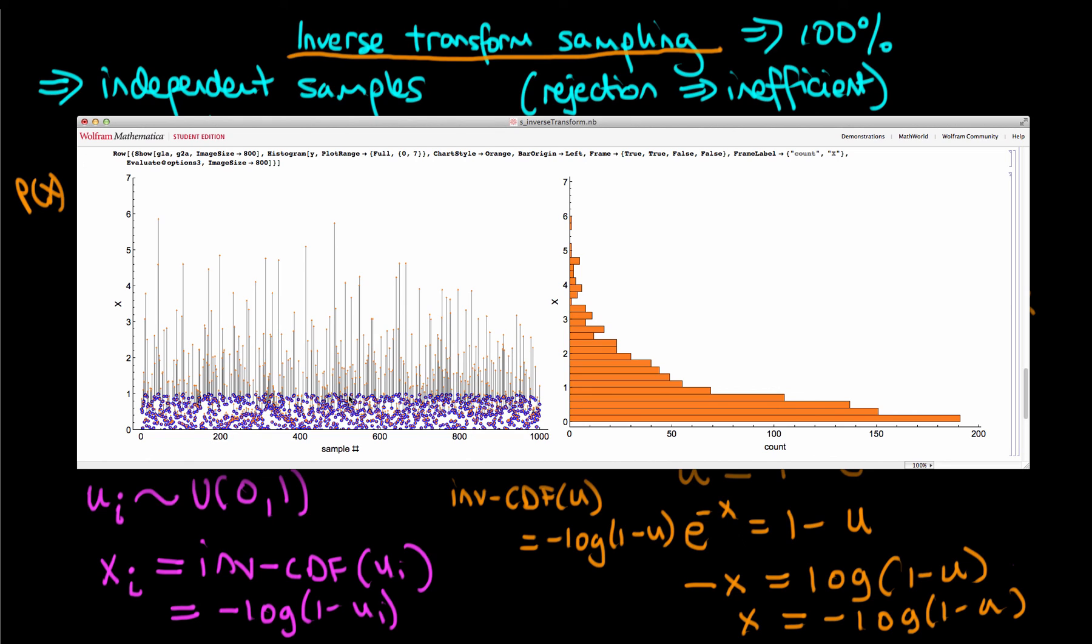Perhaps the most important issue with inverse transform sampling, which is most important for Bayesian statistics anyway, is that this method doesn't generalize well to higher dimensional problems. In higher dimensions, it's very difficult to actually work out an analytic or an approximate form of the CDF. Hence, inverse transform sampling tends to be used in univariate or at least problems with relatively few dimensions.